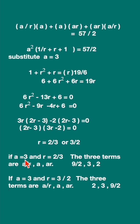If a is 3 and r is 2 upon 3, then the three terms a upon r, a, ar is 9 upon 2, 3, and 2.